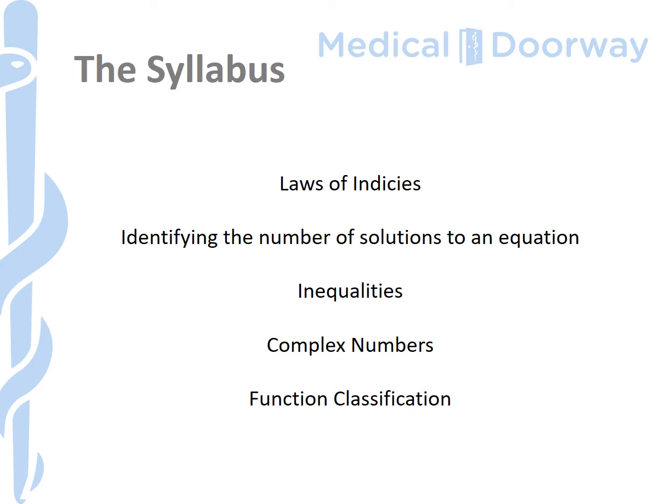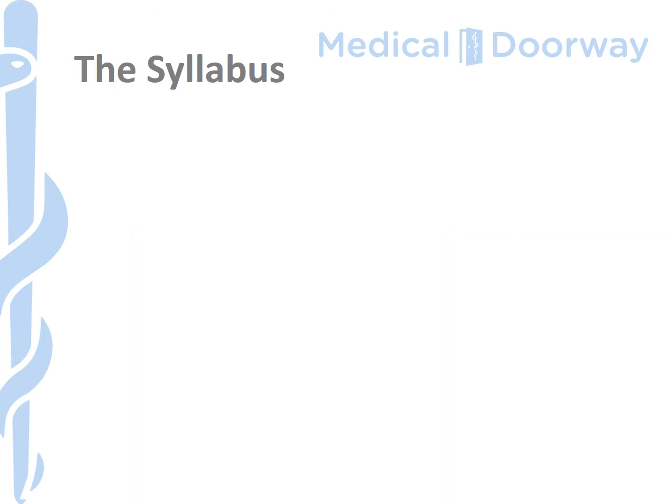We'll then go on to function classification — this is mostly just learning words to describe certain shapes in graphs; it is literally just learning a bit of jargon. From here we'll move on to inverse functions, which you'll find very useful in looking at later materials. We'll then do some trig identities. I'm going to give you a couple of extra ones — the so-called useful triangles — which should help you evaluate questions much faster in the exams.